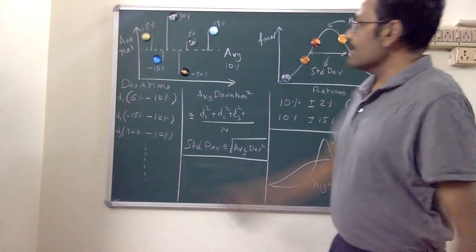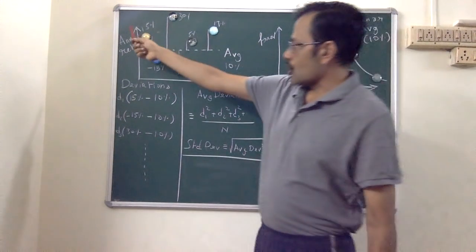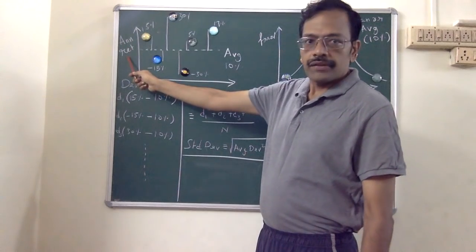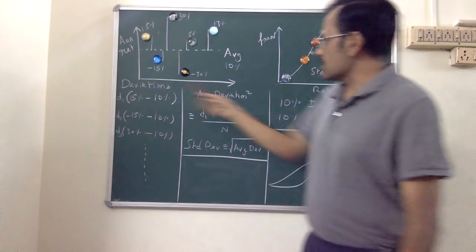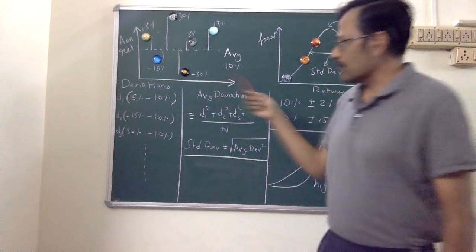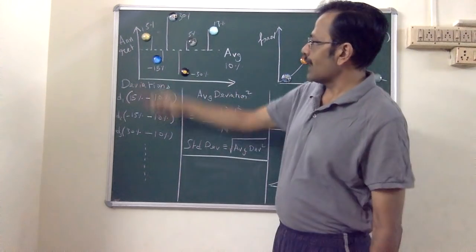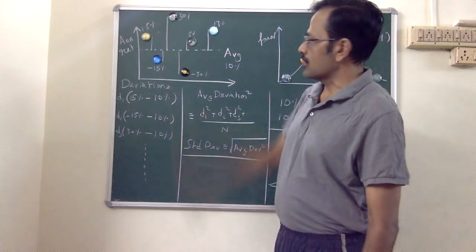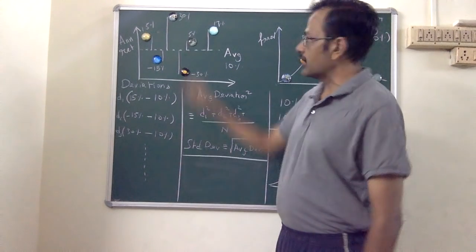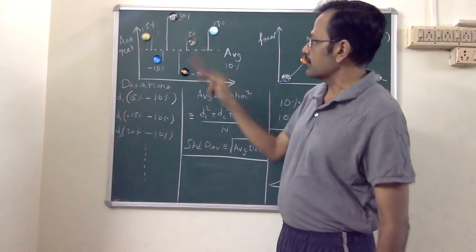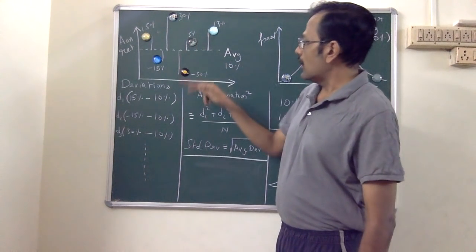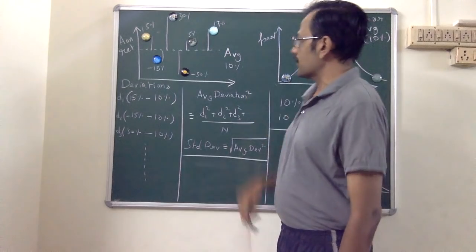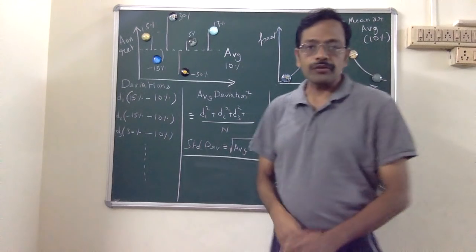Let's take any mutual fund or a stock. I have plotted the annual returns here versus time. The annual returns in one year are 15 percent, the next year is minus 15 percent, then 30 percent, minus 30 percent, 5 percent, plus 17 percent, and so on.